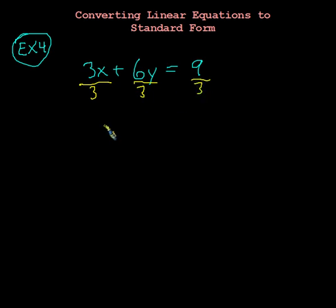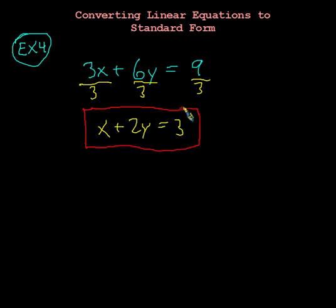And when we do, voila, we get x plus 2y equals 3. And yay, we are so happy. We did it. We got the linear equation into standard form. And in the other videos, you'll see that one of the reasons we get these equations into standard form is because it's fairly easy to graph if we use the intercepts, the x and the y intercept. You'll see that in a minute. Anyways, that's it for now.